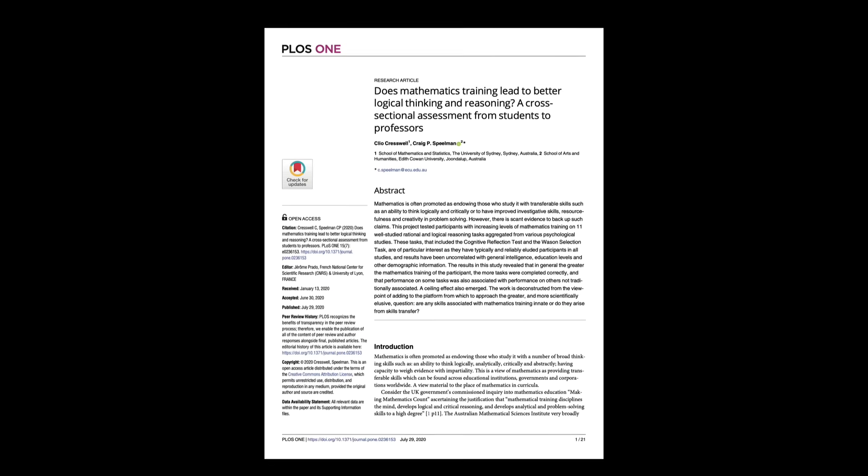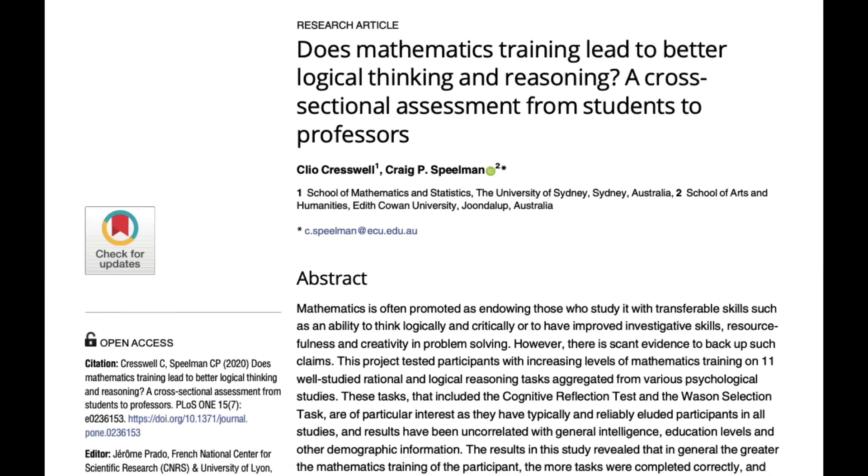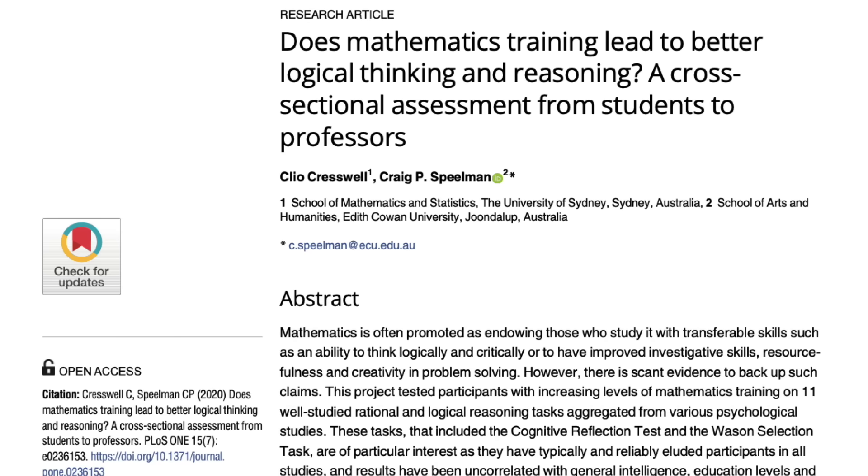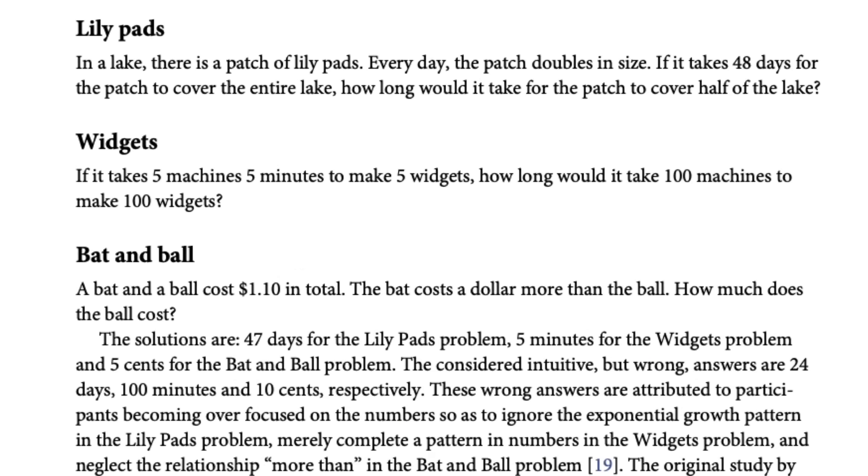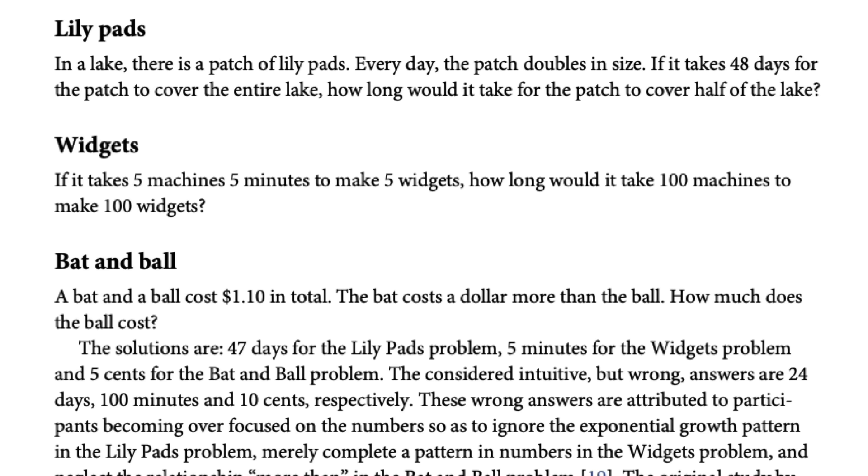A study from 2020 from the University of Sydney gathered people from low mathematical knowledge to advanced mathematical knowledge. They were given logical reasoning problems, often ones that have to do with everyday life. One of the reasoning tests was the classic Wason selection task, which has cards that have a letter on one side and a number on the other. Participants saw four cards: D, K, 3, and 7.